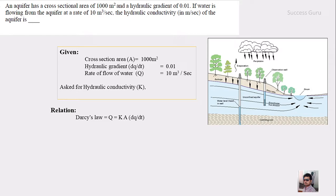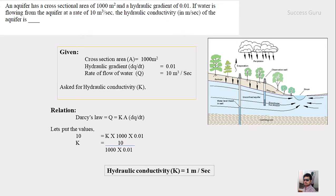Where Q is equal to KA dq by dt. By substituting the values, what we get is K is equal to 10 by 0.01. So by dividing what we get, the hydraulic conductivity that is K is equal to 1 meter per second. So if we know that Darcy's law, we can solve this question, right?